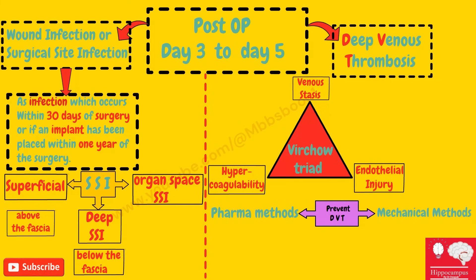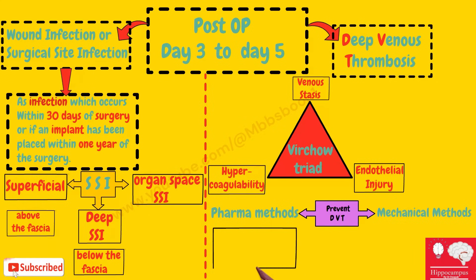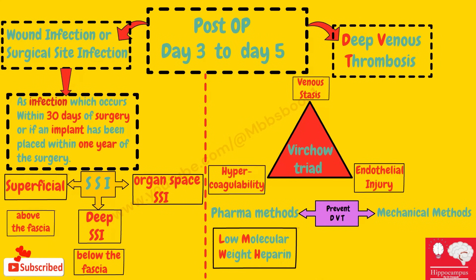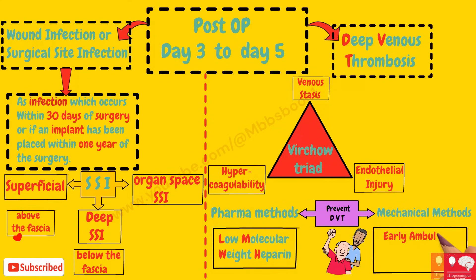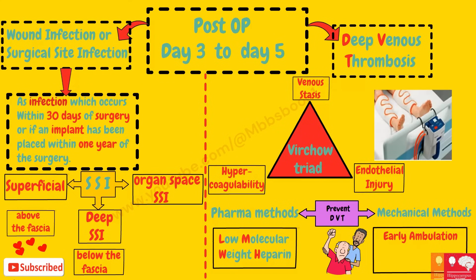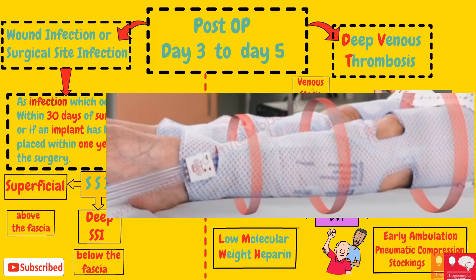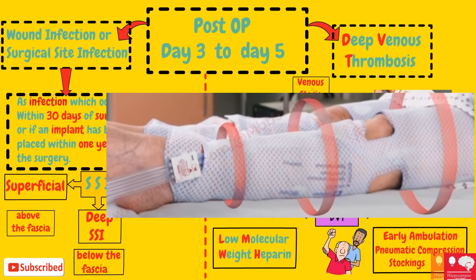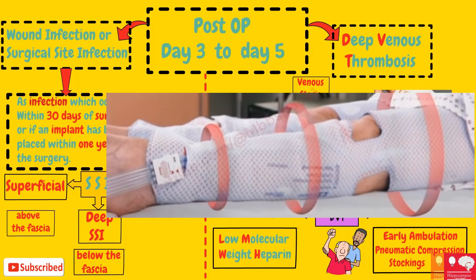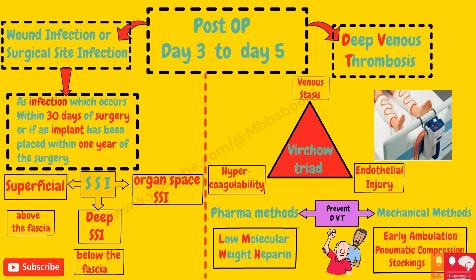Pharmacological methods are more superior than mechanical methods, and the pharmacological method used is low molecular weight heparin. The mechanical methods are early ambulation of the patient and the use of pneumatic compression stockings. These stockings are tied on the limb and connected to a pump; when they inflate intermittently they prevent stasis of blood, and when stasis is prevented DVT will not develop.